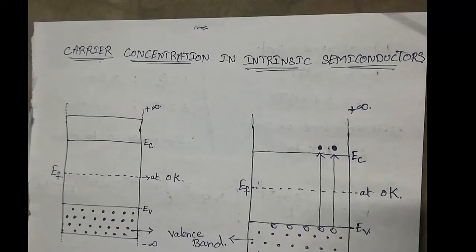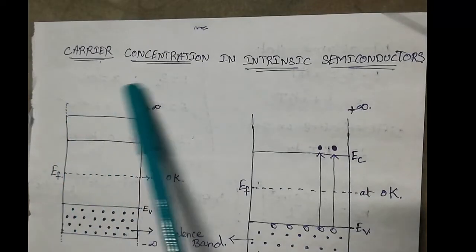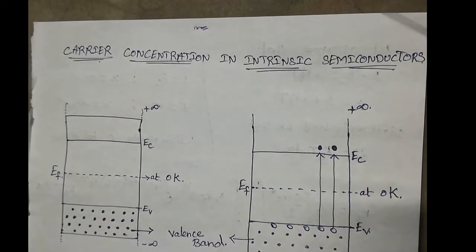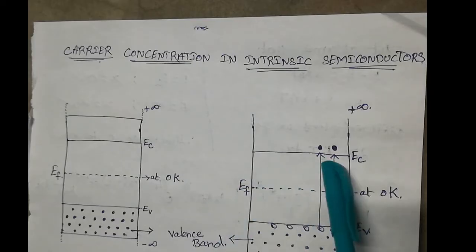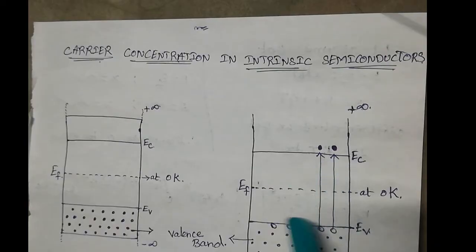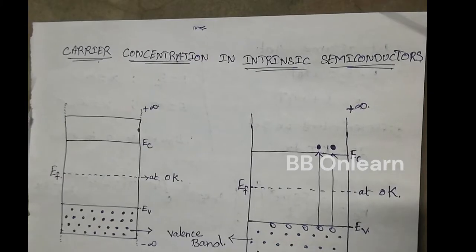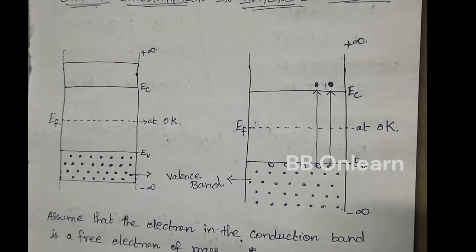Hello students! Today we need to talk about carrier concentration in intrinsic semiconductors. We will cover the density of electrons in the conduction band and the density of holes in the valence band.